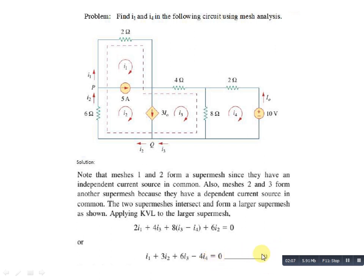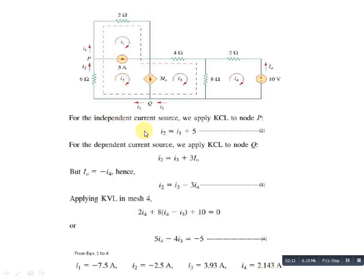Next step: for the independent current source through which the super mesh is formed — applying incoming and outgoing current at node P. The incoming current is I2 and the outgoing currents are I1 and 5 amperes. So equation 2 is: I2 = I1 + 5.